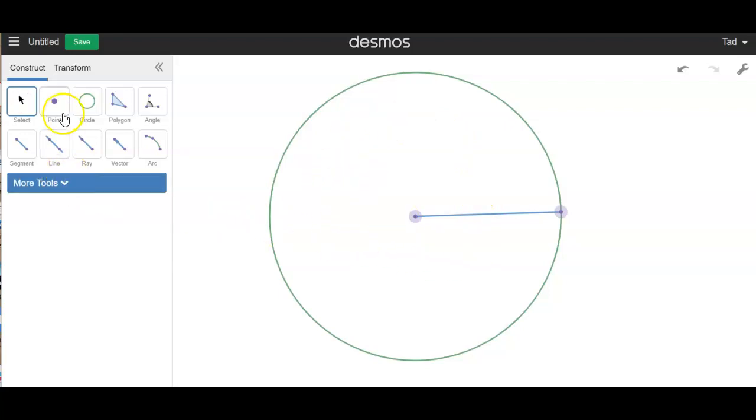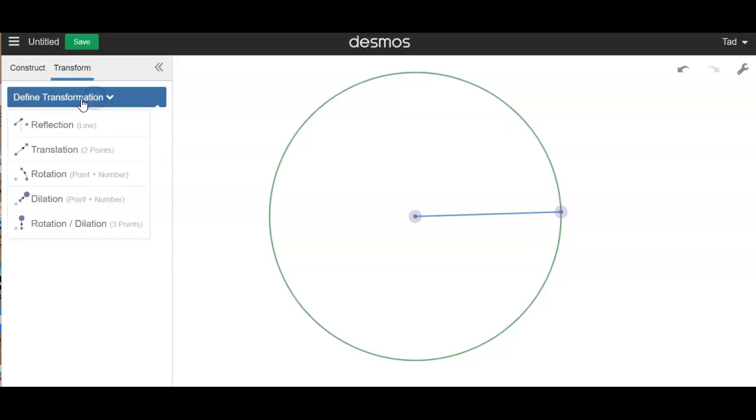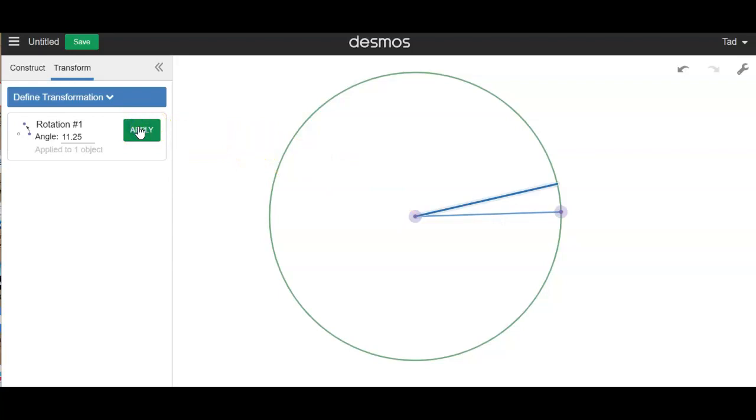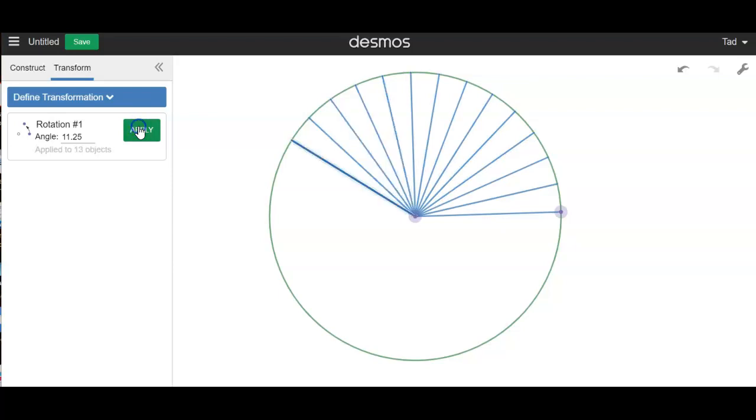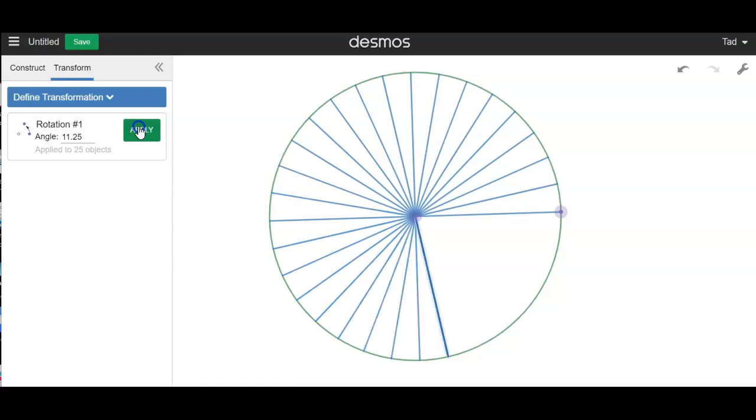So to do that I'm going to go to transform. And I want to do a rotation. It says choose your center point. So I want that to be the center of my rotation. I want the angle to be 11.25 degrees. And I select the segment and I just apply it. Boom. And if I hit this 32 times, actually 31 because I already had one radius in place.